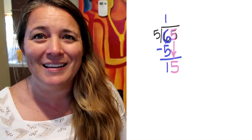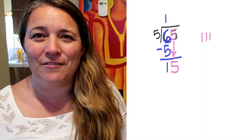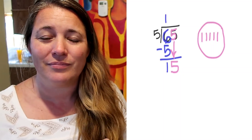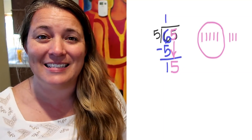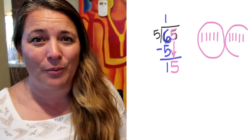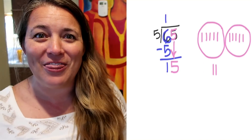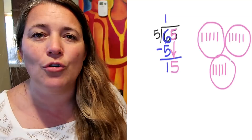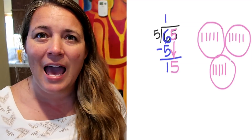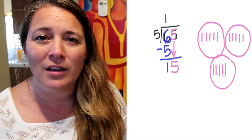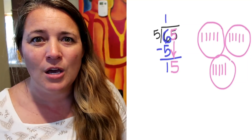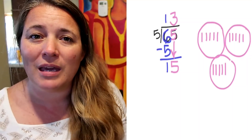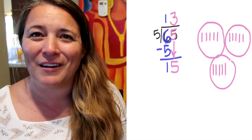Here we go: 1, 2, 3, 4, 5 — stop, make a group. 6, 7, 8, 9, 10 — stop, make a group. 11, 12, 13, 14, 15 — stop, make a group. No more sticks to be written. We've drawn all 15 sticks, and I can clearly see that I have 1, 2, 3 groups. So above the 5, we're going to write a 3, because we can make 3 groups of 5 with our 15 sticks.